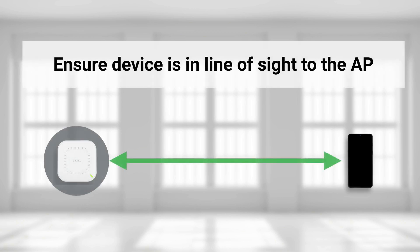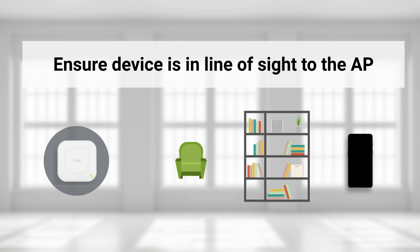When dealing with multiple rooms, two principles can assist you in deciding where to place the AP. Firstly, ensure that the connecting devices are in line of sight to the AP. This guarantees signal transmission without interference or obstruction. Once the signal is obstructed, the signal strength will be attenuated, leading to unstable communication.